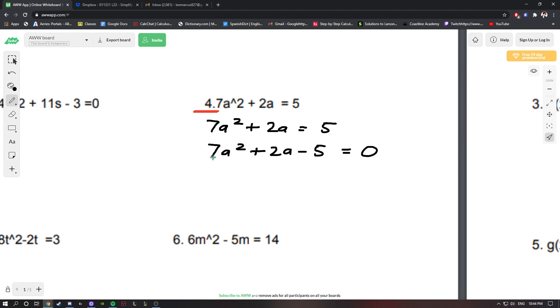Here we have a leading coefficient of 7. When we multiply that by -5, we get -35. What we're trying to find is factors of -35 that will add up to 2. We have 7a² + 7a - 5a - 5. My two factors are positive 7 and negative 5. When I multiply them, they equal -35, and when I add them up, they equal 2a. I've separated 2a into 7a - 5a.